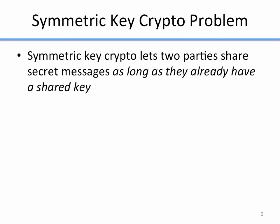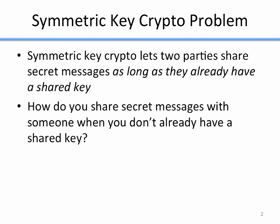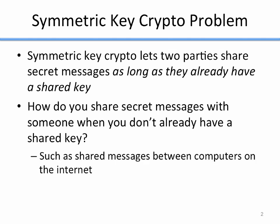Symmetric Key Crypto lets two people share secret messages as long as they already have a shared key. So Alice and Bob can send each other encrypted messages, but they need to know the key that the other one is using. That's a key problem with Symmetric Key Crypto — how do we make sure that Alice and Bob know that key? So how do you share secret messages with someone when you don't already have a shared key? The Diffie-Hellman problem is meant to help with that.